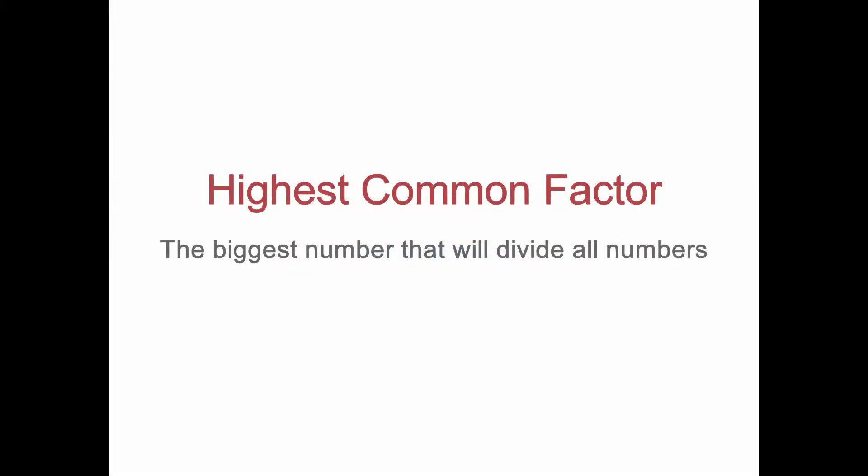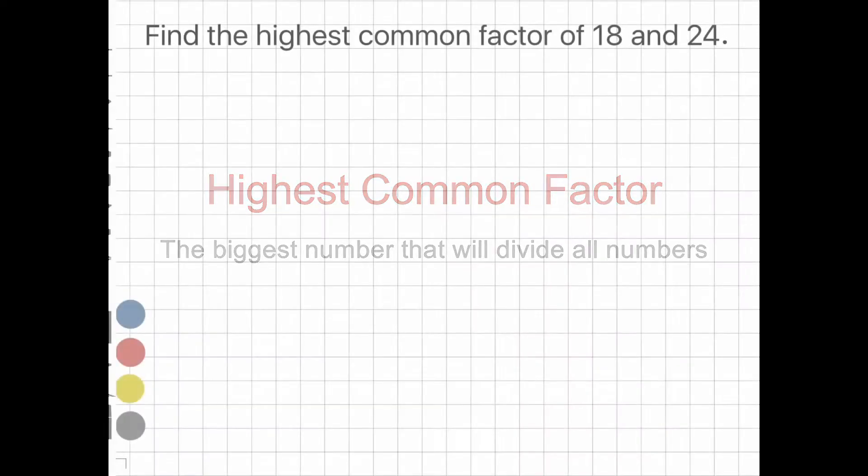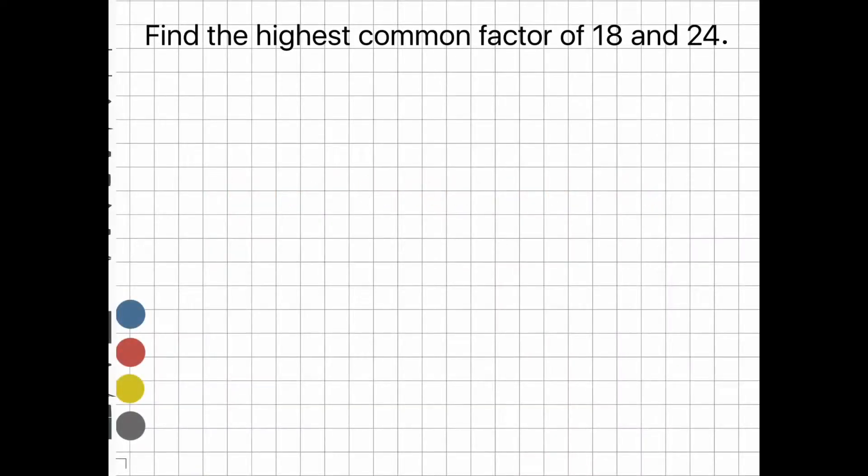The highest common factor is the biggest number that will divide all numbers. The question: find the highest common factor of 18 and 24. One way of working this out is to list the factors of all the numbers.